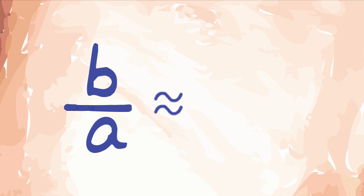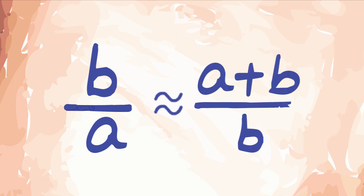This means that if A and B are Fibonacci numbers, B being the larger one, then B by A is approximately equal to the ratio of the next Fibonacci number, which will be A plus B, to B.